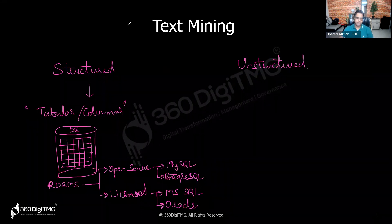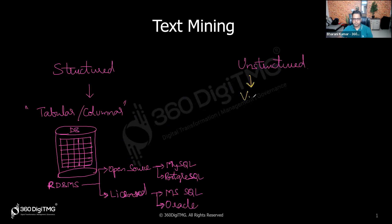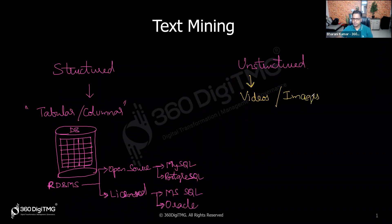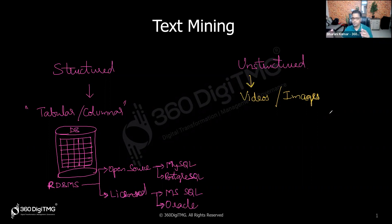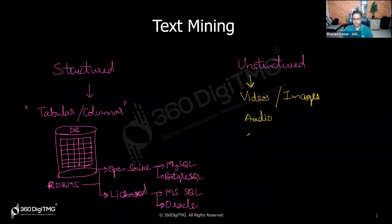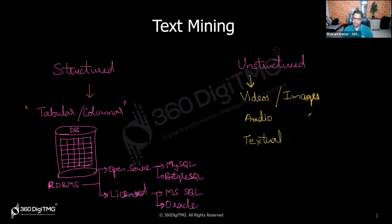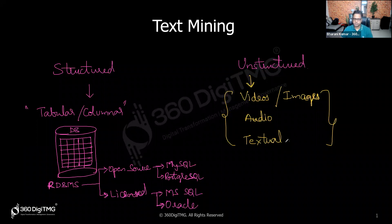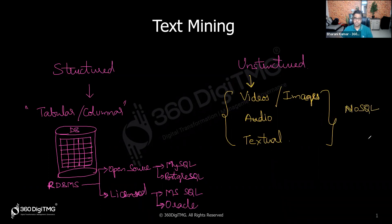On the other side, you have unstructured data such as images, videos — which are combinations of multiple images — audio files, and textual data. These come from different data sources and are stored in NoSQL databases like MongoDB, Cassandra, HBase, etc. The majority of unstructured data is in textual format.